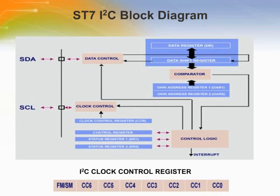The SDI line is connected to the data control and the 8-bit shift register of the data register. There are two own address registers. After a start condition, the first received data is compared to the value in the own address register.